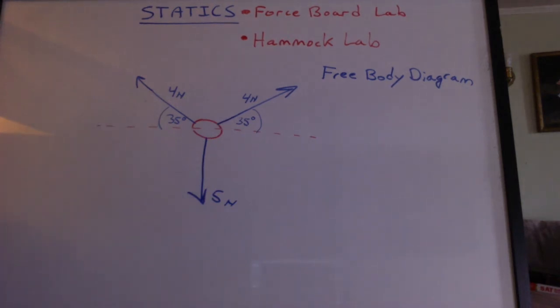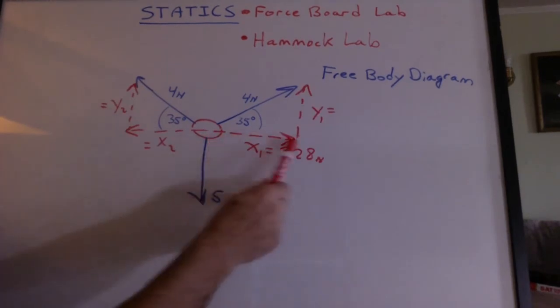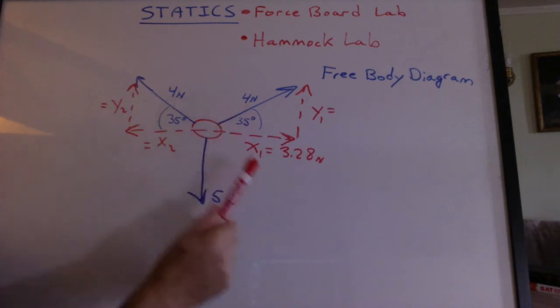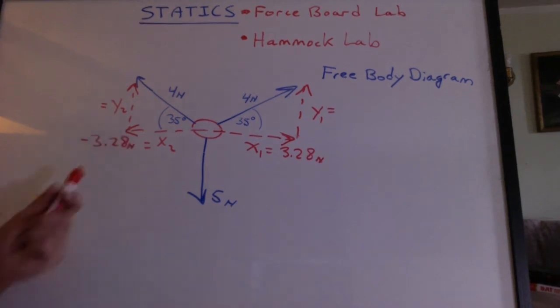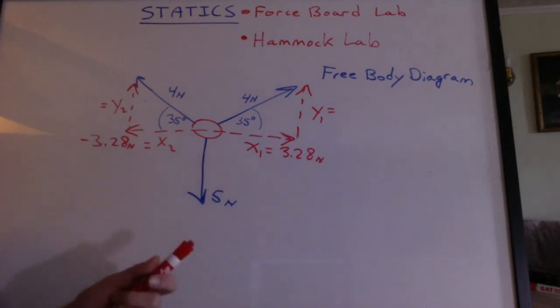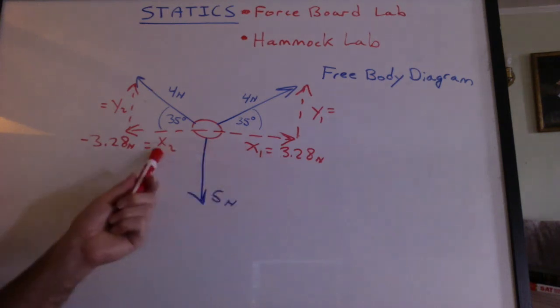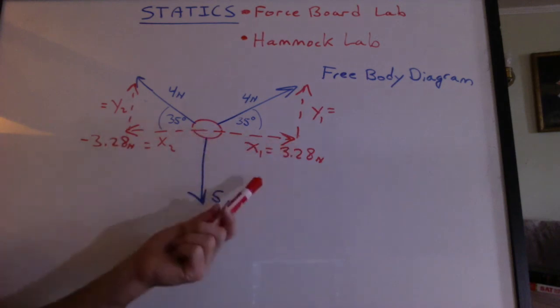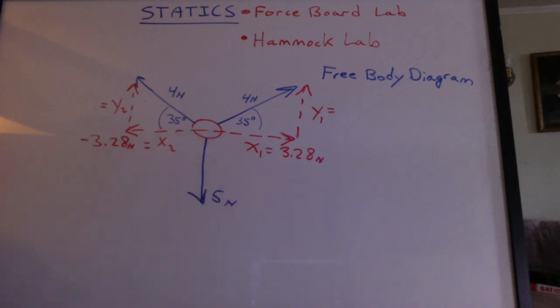Now we have to break these vectors up into components. We have an x component and a y component for this spring scale and an x component and a y component for that one. And if we use cosine of 35 times 4, we get 3.28. How much force do you think x2 is? It's the same thing. It's just negative. It's going in the opposite direction. How do these x components compare? They should be equal. Does the ring accelerate in either direction? No. So therefore, the x components have to be equal.